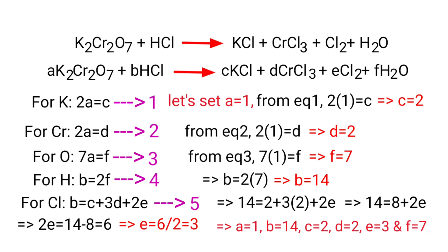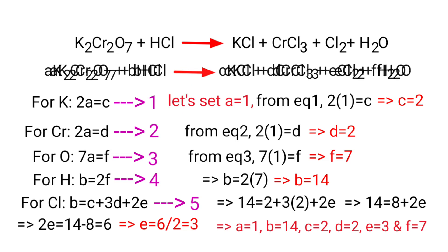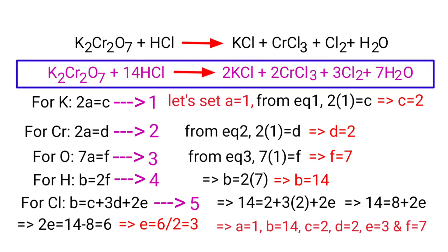Now apply the a, b, c, d, e, and f values in the above equation. Therefore K₂Cr₂O₇ plus 14HCl gives 2KCl plus 2CrCl₃ plus 3Cl₂ plus 7H₂O.